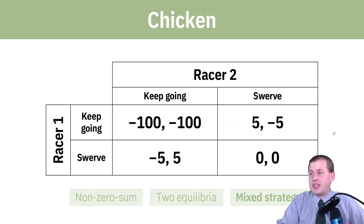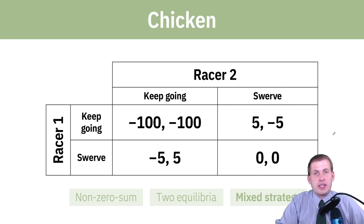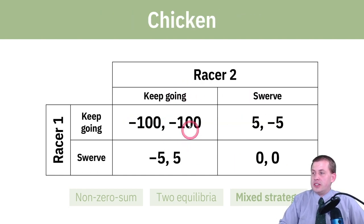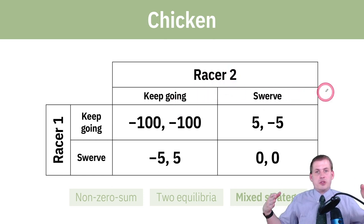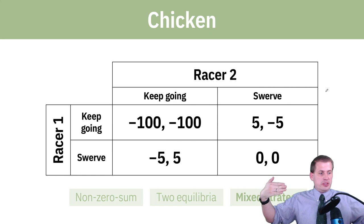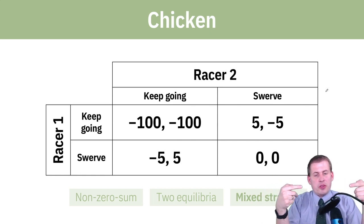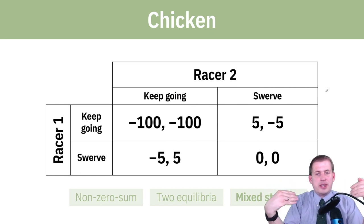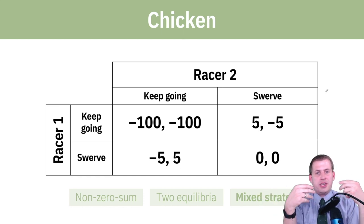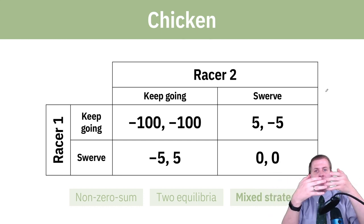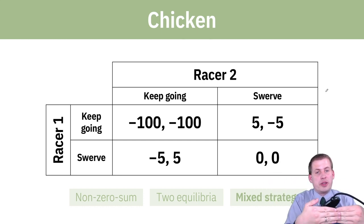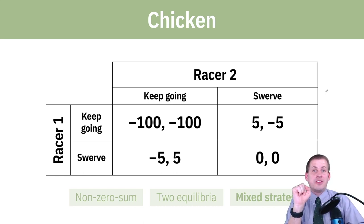There are other situations — this is a game called chicken — where the Nash equilibrium has multiple solutions, just like the Bach-Stravinsky game. The situation here is if you have two cars racing at each other at full speed, head-on. The payoffs are structured so that if they both keep going and crash into each other, you get negative 100 utils — they both die and that's bad. You don't want them both to keep going and hit each other.